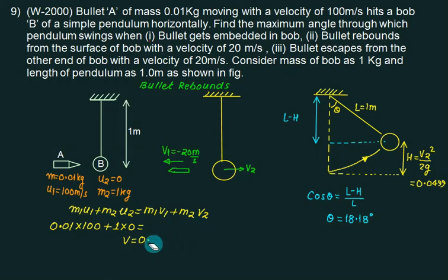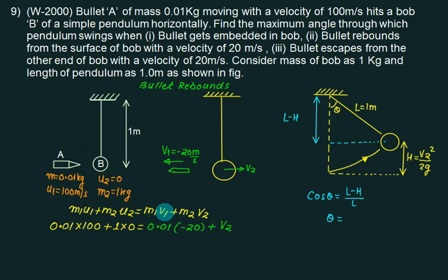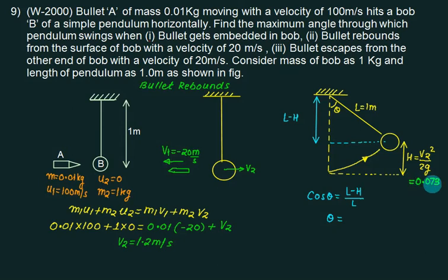On the right-hand side we get a different value of v2. The law of conservation of momentum is m1*u1 + m2*u2 = m1*v1 + m2*v2. The only change is that v1 is taken as minus 20. Solving gives v2 equal to 1.2 m/s, and then capital H comes out to be 0.073 m.